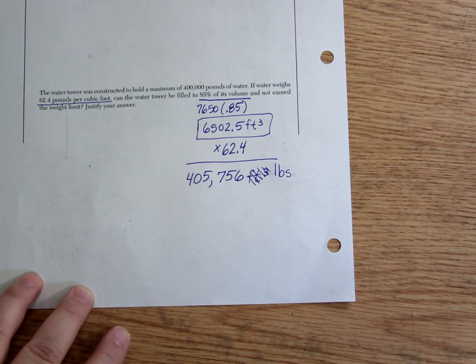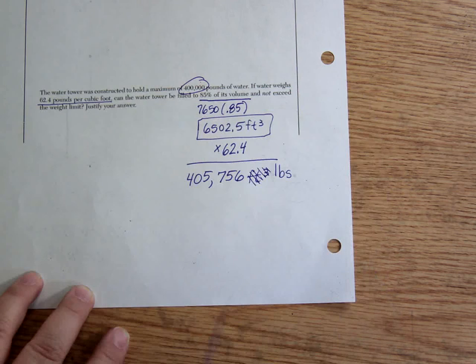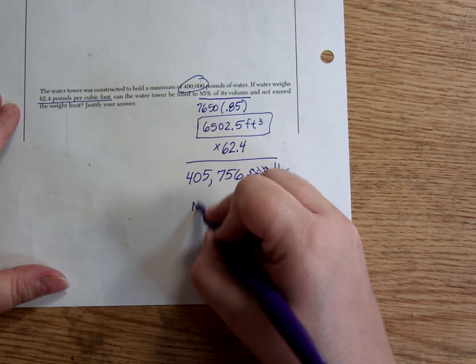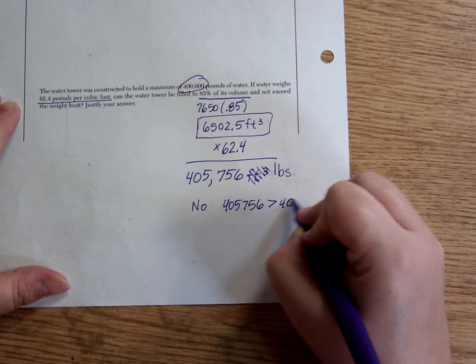So, can it not exceed the weight limit? What was the weight limit? The weight limit was 400,000 pounds. We are definitely greater than 400,000 pounds. So I would say no. This number is greater than 400,000. And that would be my answer.